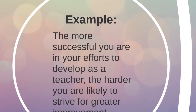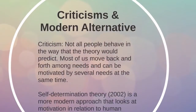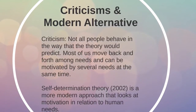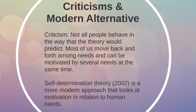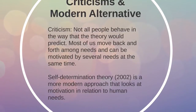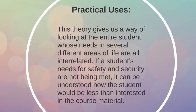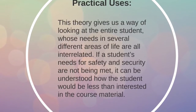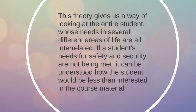For example, the more successful you are as a teacher, the more likely you are to push yourself towards improvement. One criticism for Maslow's theory is that not all individuals act in a way that aligns with his hierarchy — most humans move along a continuum, jumping up and down levels to achieve goals. Self-determination theory modernizes this idea by focusing on motivation in relation to human needs, bringing a student's whole life into the classroom, allowing deficiency needs to be fulfilled before attempting self-actualization. A student's survival and safety needs take precedence over being needs until they have been fulfilled.